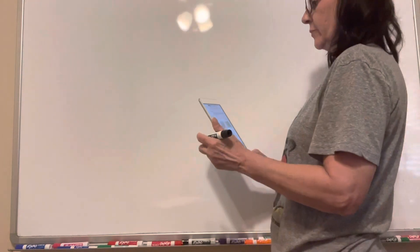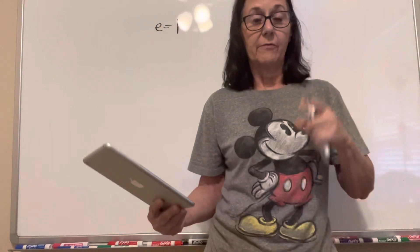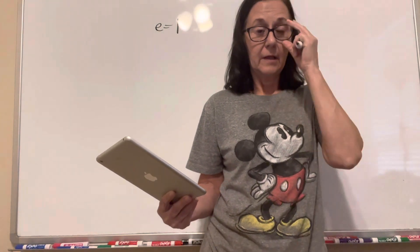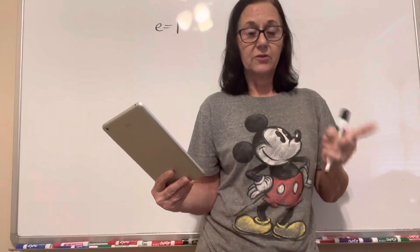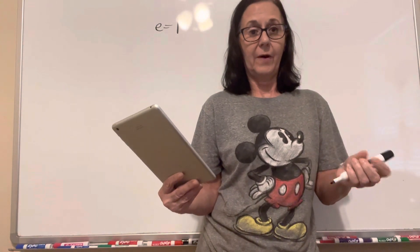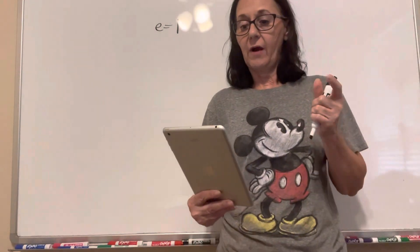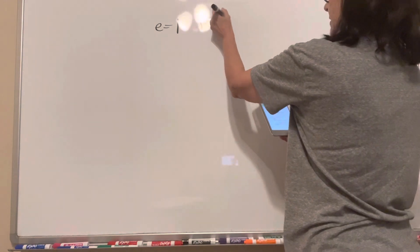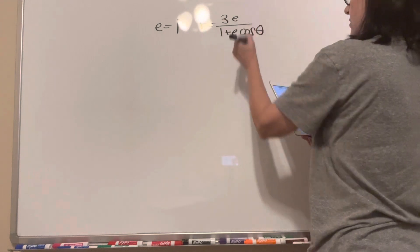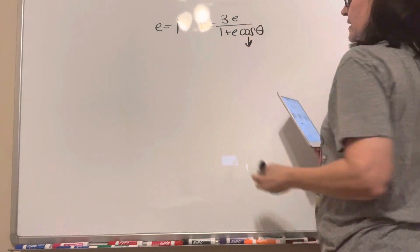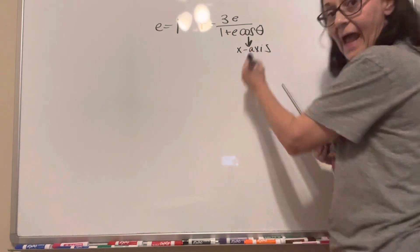We'll start with Example 2B. We're plugging in for the eccentricity 1. I already know that between 0 and 1 it's an ellipse. If the eccentricity is 1, then we know it's a parabola. The equation is 3E over 1 plus E cosine theta. Because it's the cosine, I know my vertex is going to lie on the x-axis.